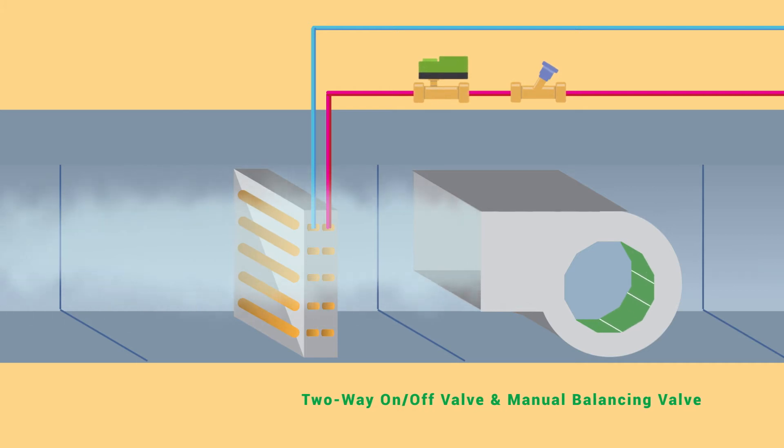You could go for a two-way on-off valve with a manual balancing valve. Think how many that will take for a whole building.